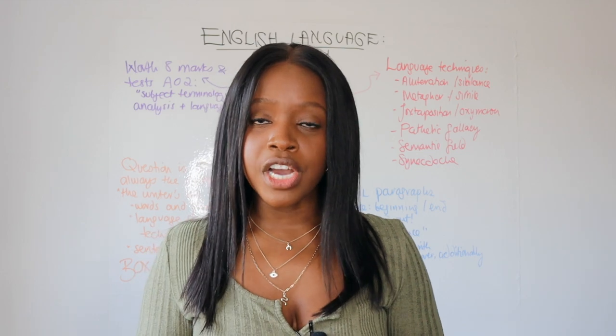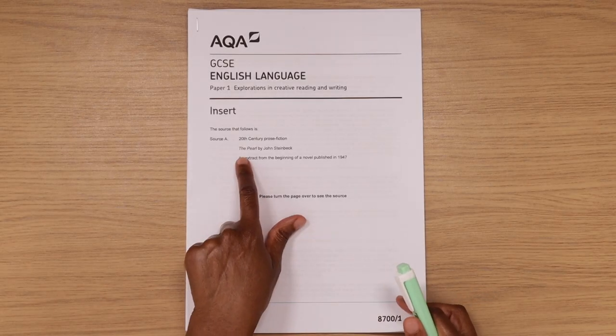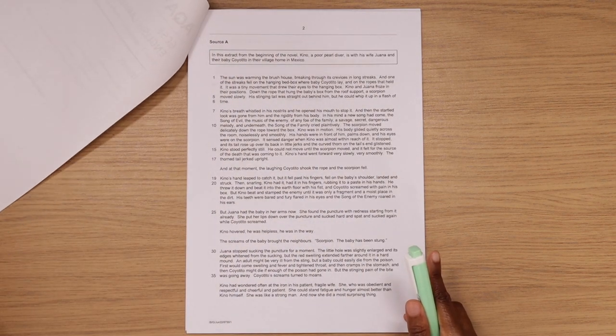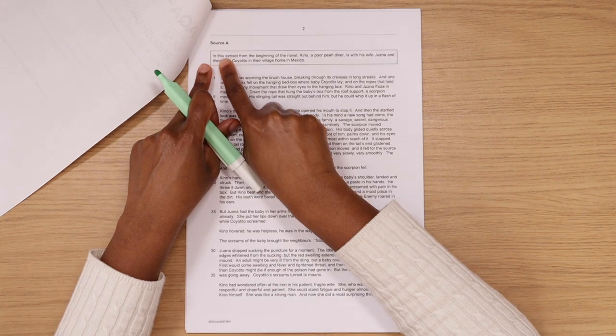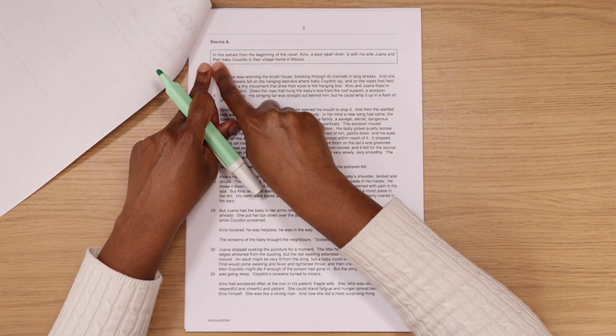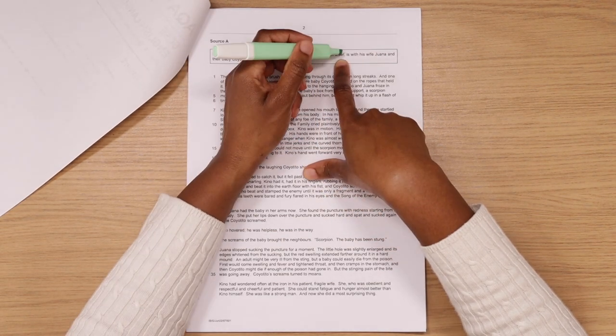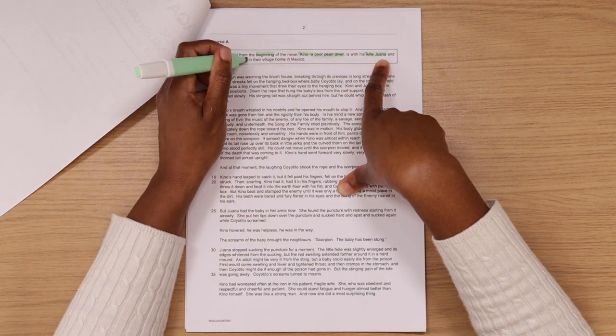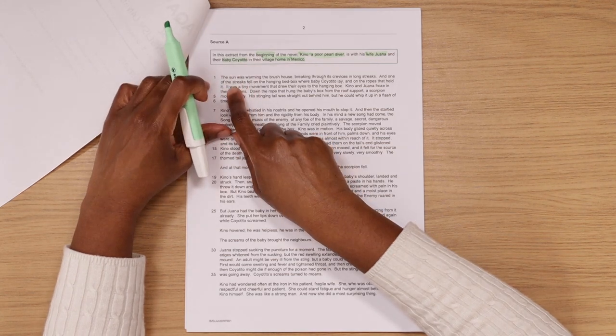So with that being said, guys, I'm now going to walk you guys through a model response that I've written for a past paper question, specifically tackling question number two. So here we're told the extract is called The Pearl by John Steinbeck and this extract is from a novel published in 1947. So here we're given a little bit of a blurb. Always read the blurb. Don't assume you don't have enough time for this because this is the only context we're given. In this extract from the beginning of the novel, Kino, a poor pearl diver, is with his wife, Juana, and the baby Coyotito in the village home in Mexico.